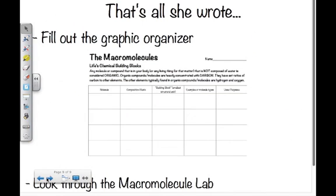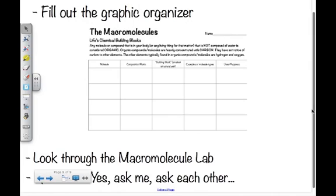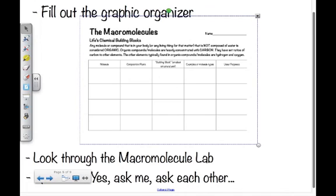That completes this lesson. We went through a lot of technical information, but like everything else in this class, each concept builds on another. Understanding these macromolecules will come in handy when we start discussing the cell, cellular processes, and cellular reproduction. Make sure you have your graphic organizer filled out — know what each macromolecule is, its composition, its smallest structural unit or building block, examples, and functions.